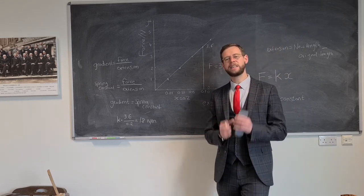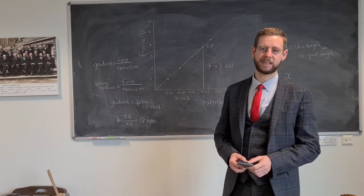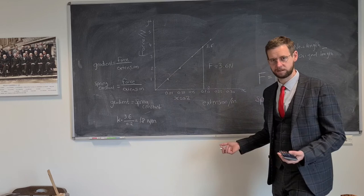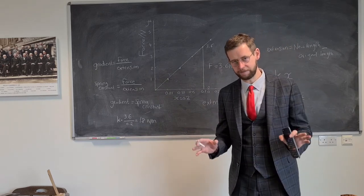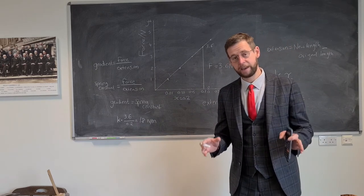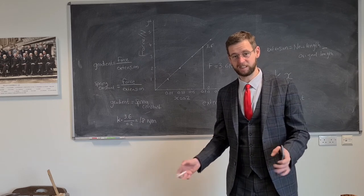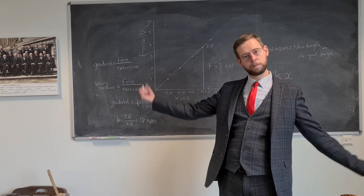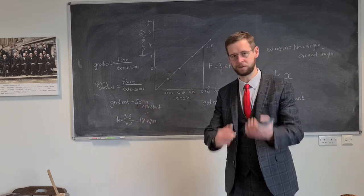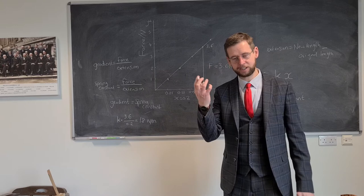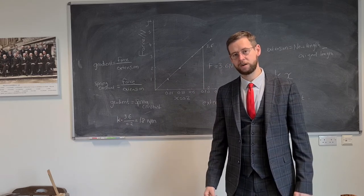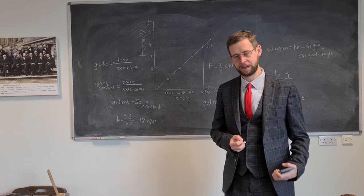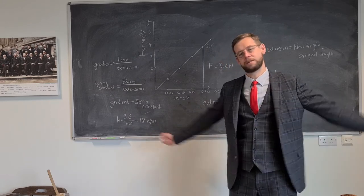But I think you need to understand the spring constant a little bit more than this. It's not just a case of it's the gradient of the graph, it's the constant of proportionality between these two variables. No. It's how stiff the spring is. If it has a high spring constant, it's really stiff. And if it has a low spring constant, it's really not stiff at all. And so you've got to kind of picture what the spring constant means. You're expecting a high spring constant of something that doesn't give very much, and a low spring constant of something that gives really late.